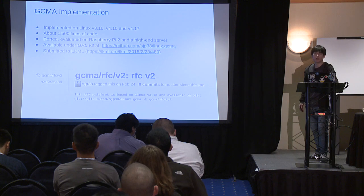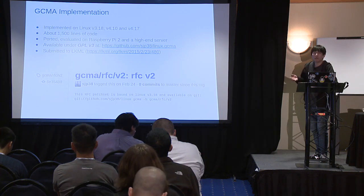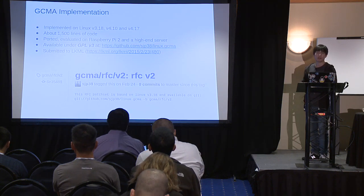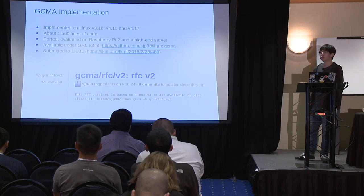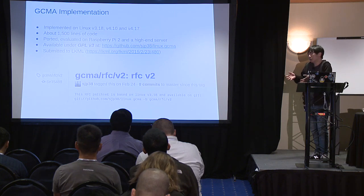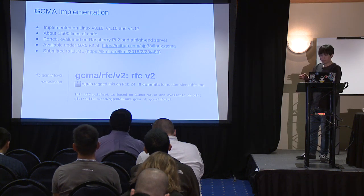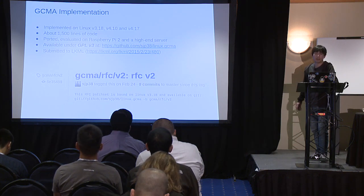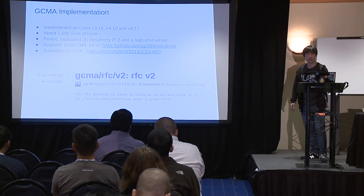We implemented GCMA on Linux v3.18, then re-implemented it on v4.10 and v4.17. The entire implementation is just 1,500 lines of code. It has been ported and evaluated on Raspberry Pi 2 for low-end system evaluation and on a high-end server for contiguous memory allocation performance evaluation. The source code is available under the GPL v3 license on GitHub, and the second version RFC has been submitted to LKML.